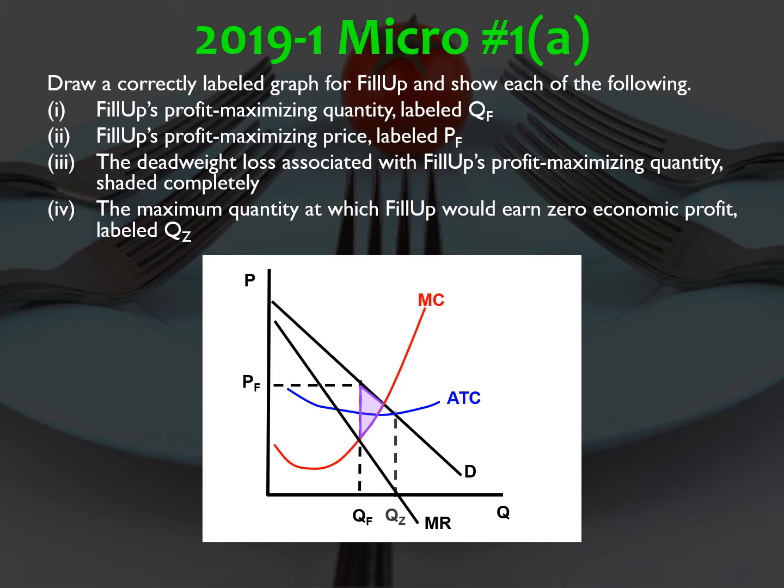Part four is QZ — that's the maximum quantity at which Phillip would earn zero economic profit. That's where demand equals ATC. On the graph it's where MR equals zero, but that's just how the graph ended up. What you want to focus on is where the price on the demand curve equals ATC.